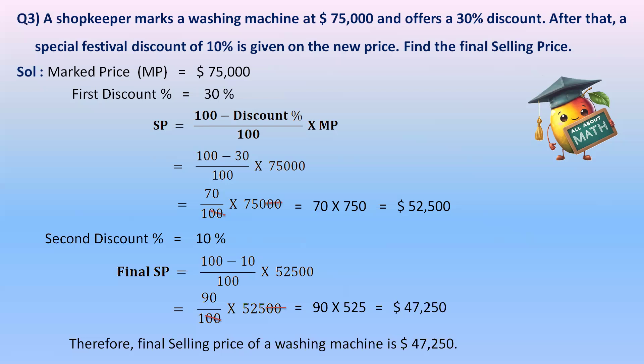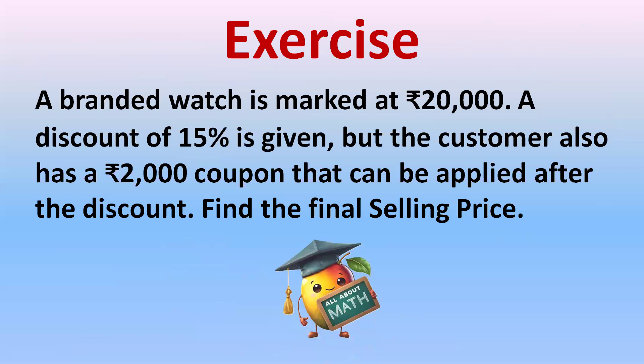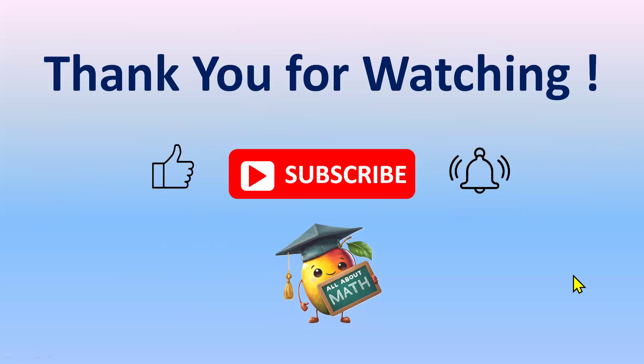This is how you solve any question where selling price is to be found when one or more discount percentages are given. Practice exercise: A branded watch is marked at 20,000 rupees. A discount of 15% is given, but the customer also has a 2,000 rupees coupon that can be applied after the discount. Find the final selling price. Apply the formula first, then subtract 2,000 rupees. Thank you for watching — please subscribe, like, and hit the bell icon for upcoming video notifications.